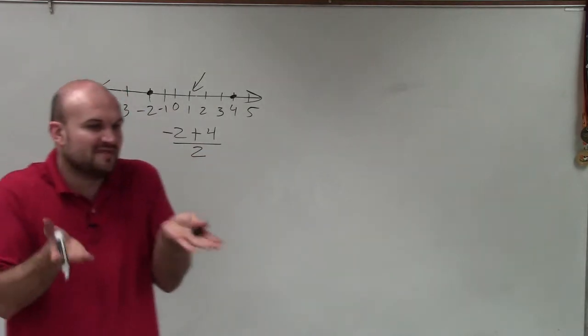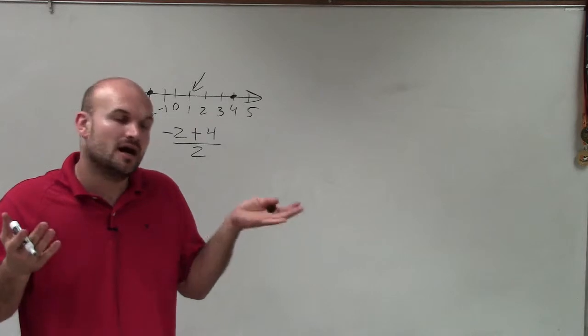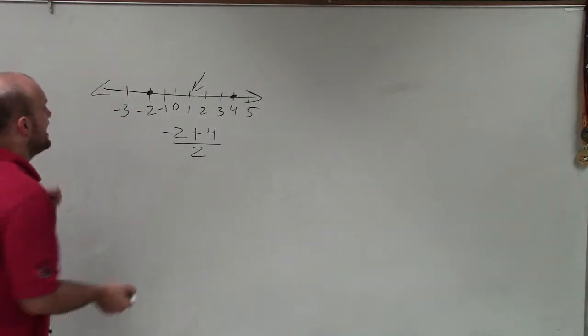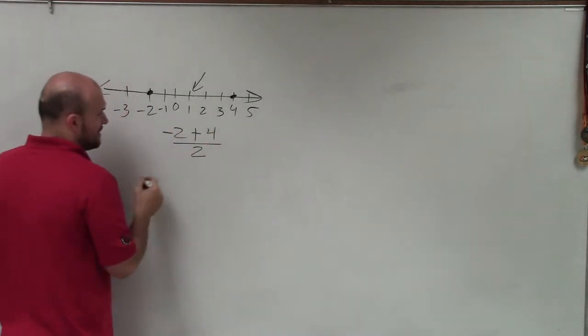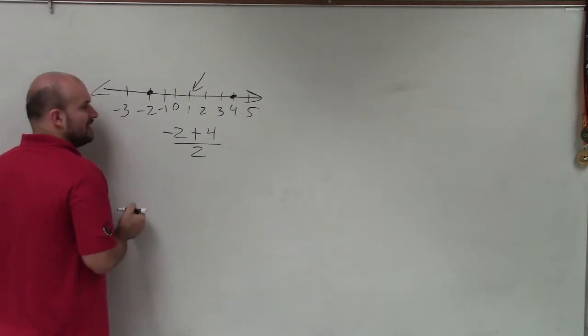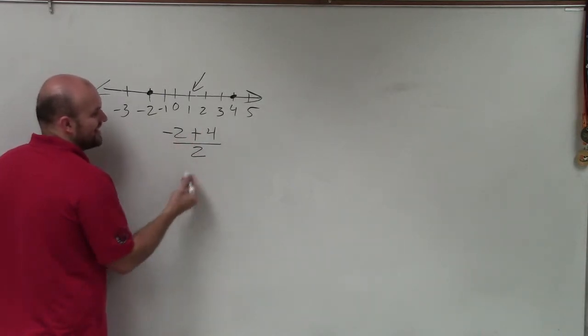So I can take those two values. Pretty much what you're doing is finding the average between those two values. So I take negative 2 plus 4 and divide it by 2. Well, negative 2 plus 4 is going to be 2 divided by 2.